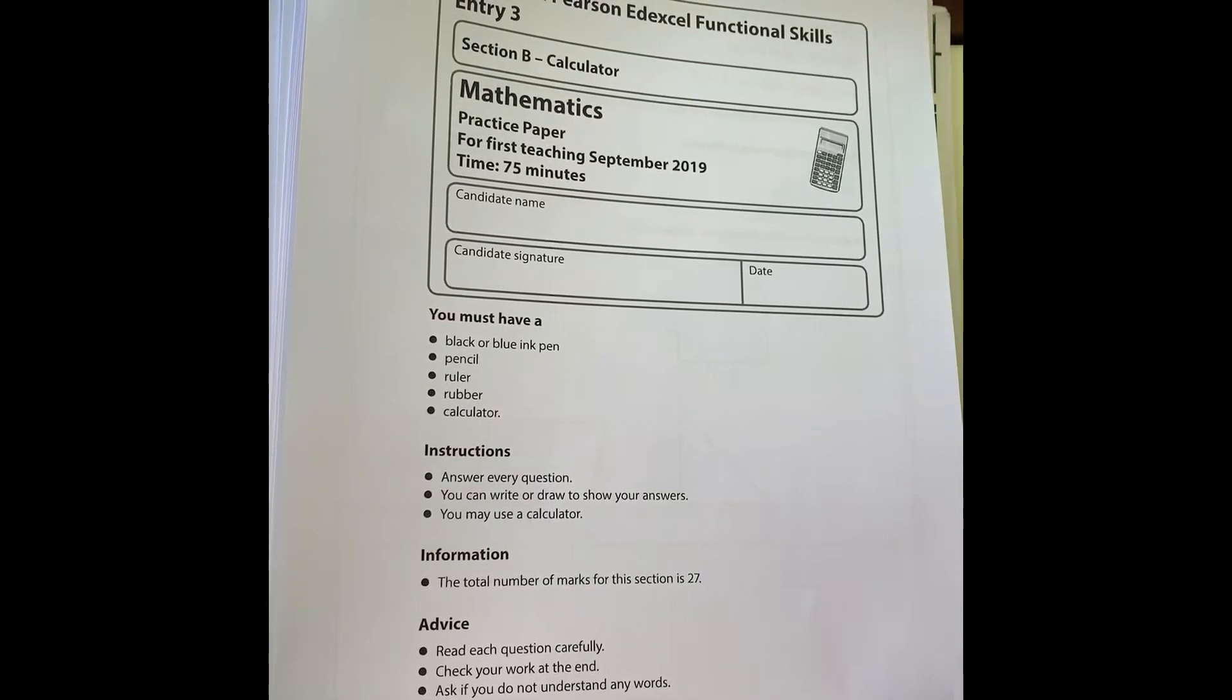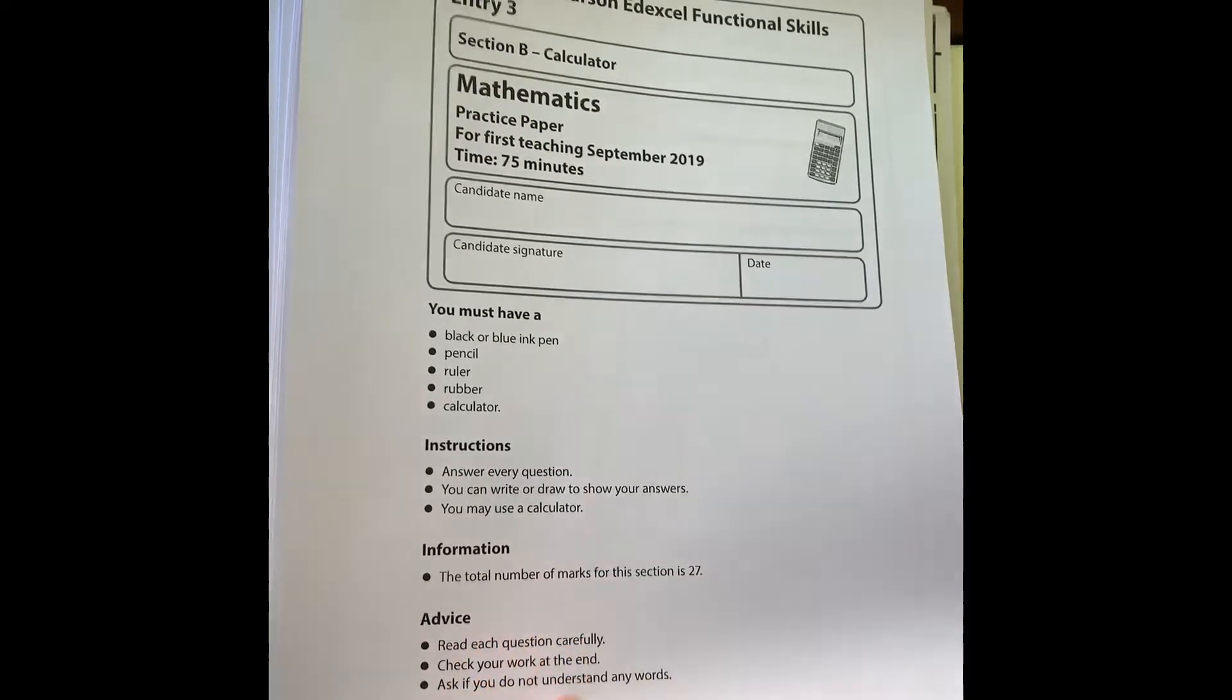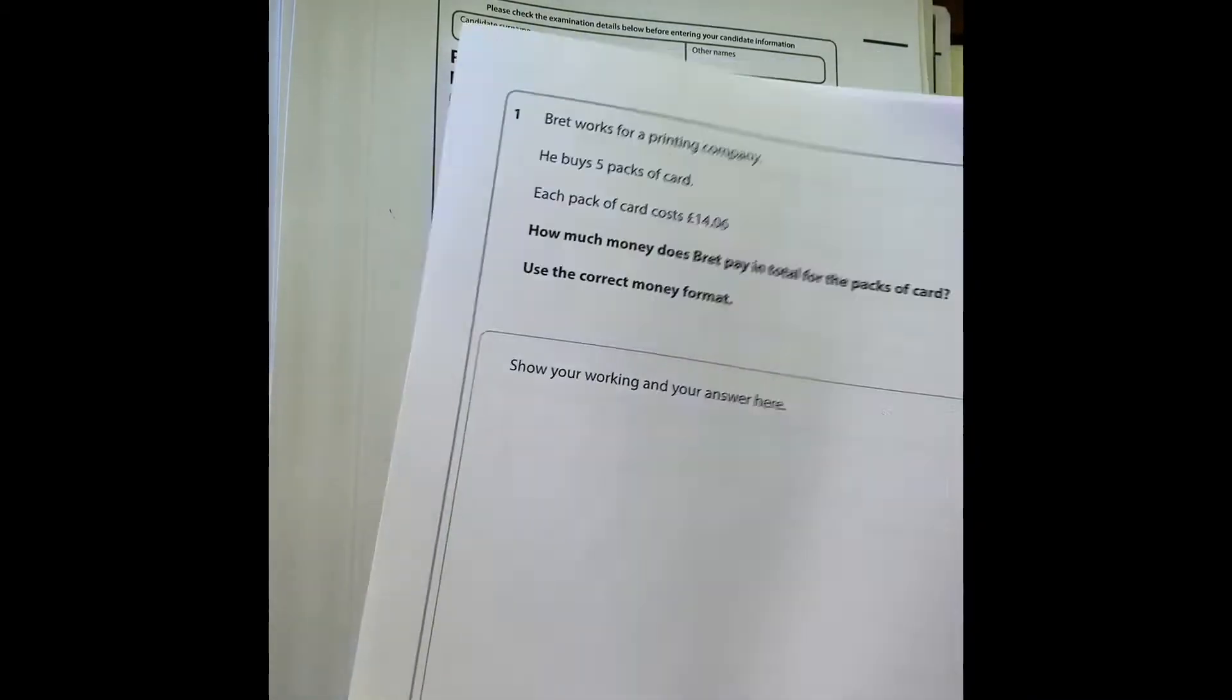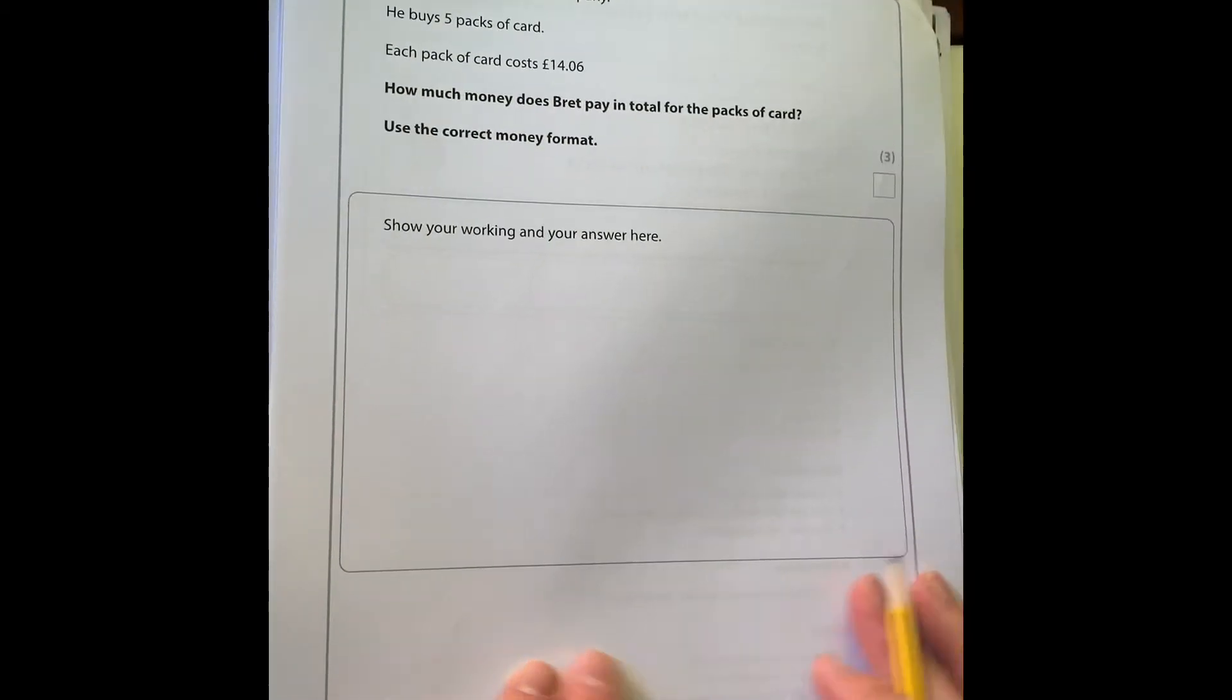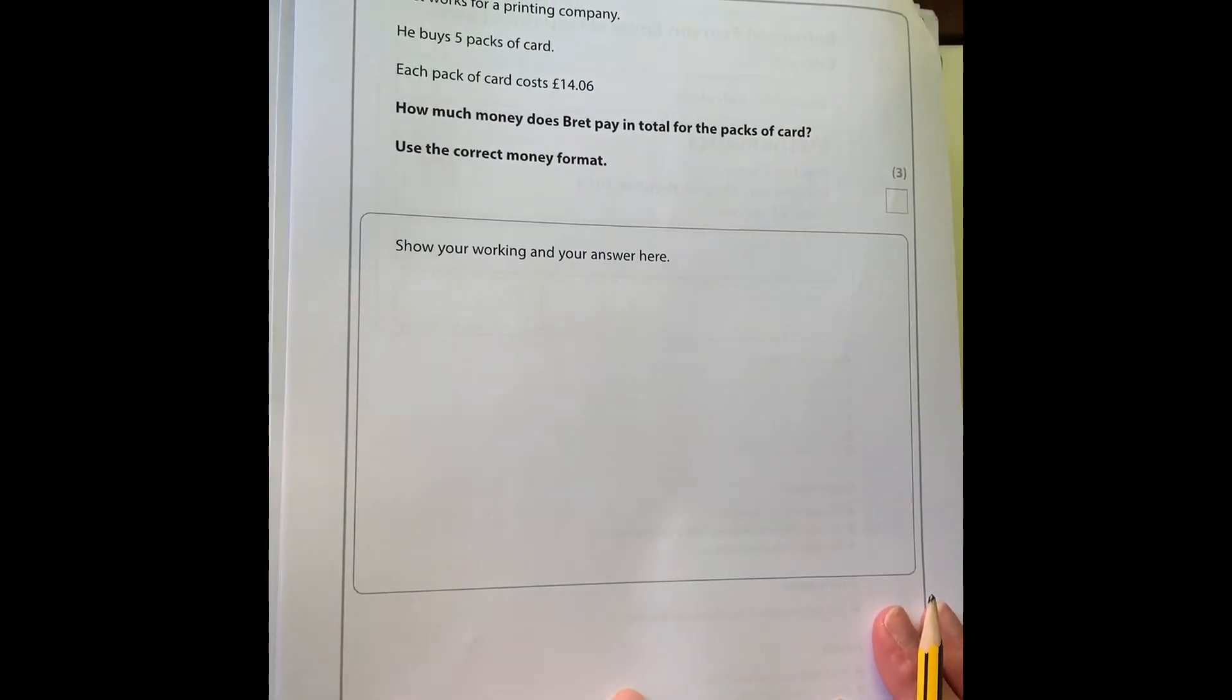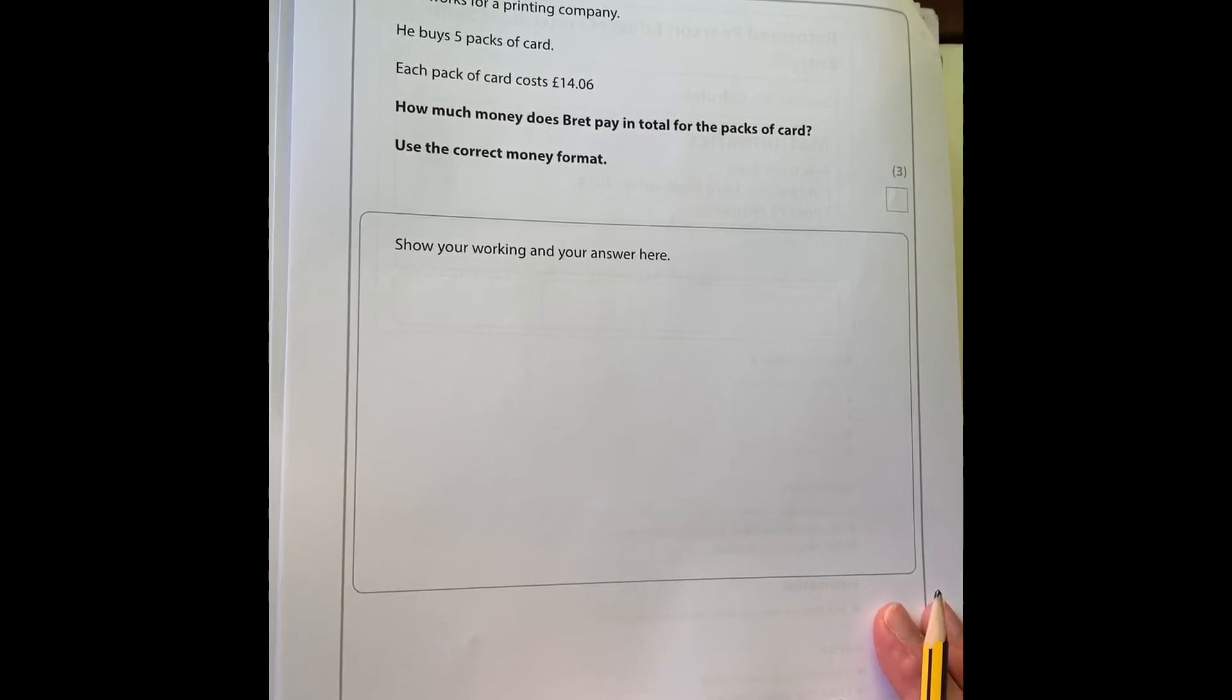Hi, this video is a walkthrough of a sample paper for Entry 3 maths, and this one is the calculator paper. So question one: Brett works for a printing company. He buys five packs of card and each pack of card costs 14 pounds and 6p.